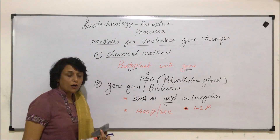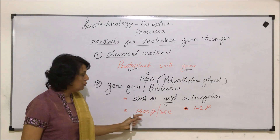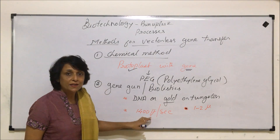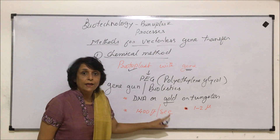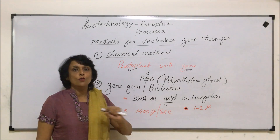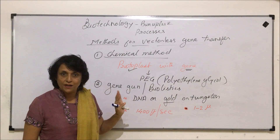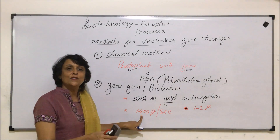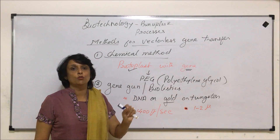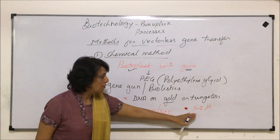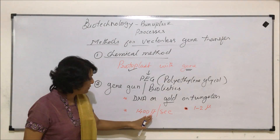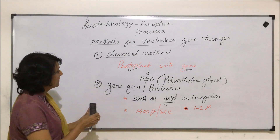The bullets must be shot at a speed of exactly 1400 feet per second. The units here are feet per second, not meters per second, so we must remember this number. If the speed is more than this, the particle will go right through the cell and come out the other end. If the speed is less, it will bounce off the plasma membrane. Only at exactly this speed will the particle successfully enter the cell.